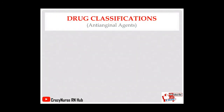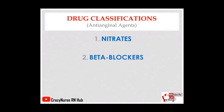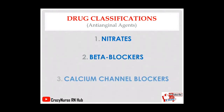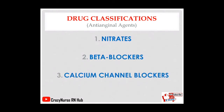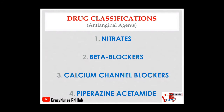Let's have the different drug classifications under anti-anginal agents. First, we have nitrates, beta blockers, calcium channel blockers, and piperazine acetamide.